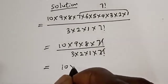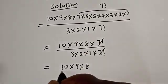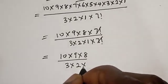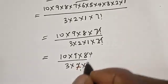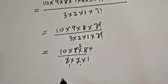10 times 9 times 8 over 3 times 2 times 1. 2 divides into 8 four times, 3 divides into 9 three times.